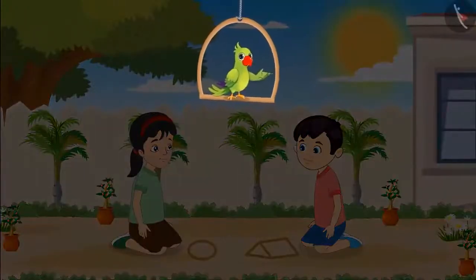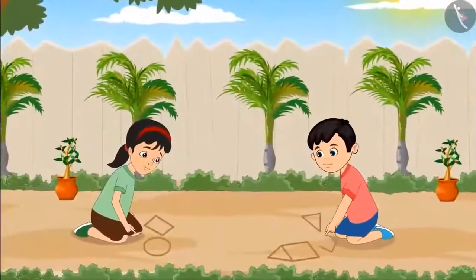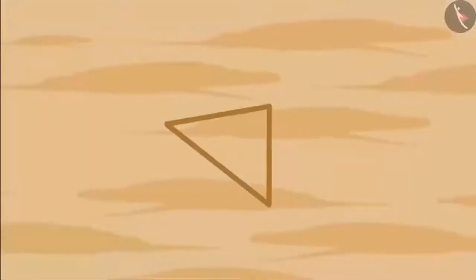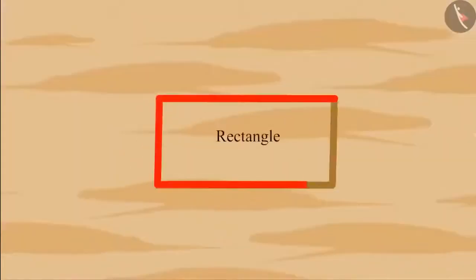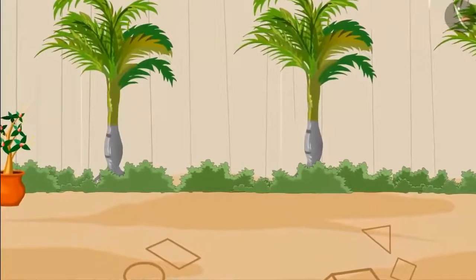So children, did you see how Chotu and Pinky are playing by making different shapes in the sand? After some time, they started making different types of triangles, squares, rectangles, and circles. Can you tell what shape this is? Yes, it is a triangle, because it is made of three sides. And this one? It is a square, because it is made of four equal sides. And this is a rectangle. After playing, Chotu and Pinky went to do their school homework.